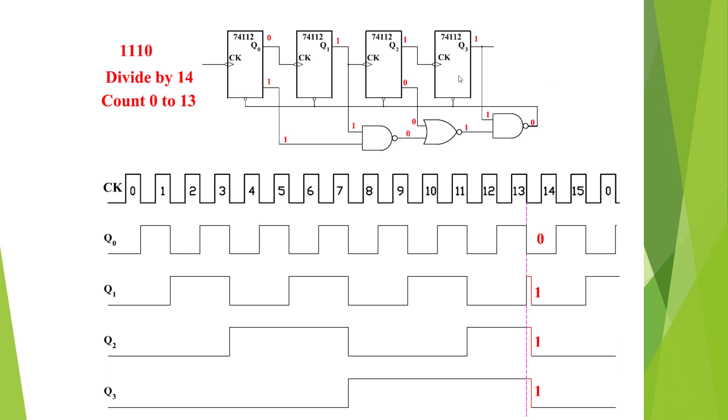So we're going to count. We're going to start with the most significant digit and work our way down to the least. So we're going to have a 1, 1, 1, 0, which is going to be a divide by 14.